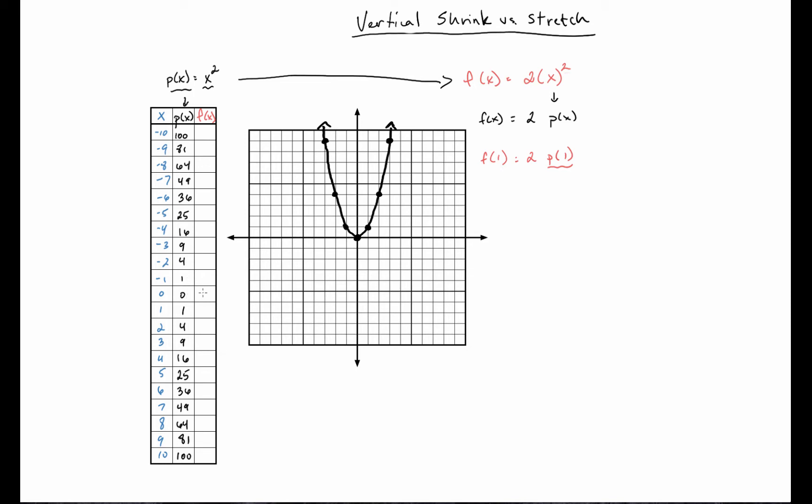So 0 times 2 is just 0. 1 times 2 is just 2. 4 times 2 is just 8. And so on and so forth. Now, let's put them on the graph and get an idea of how this looks different.